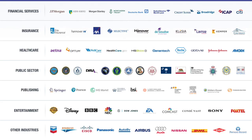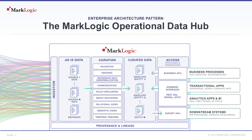Everyone is looking to fulfill the mantra of better, faster, cheaper, no matter the industry. Many major companies have solved their data integration problems with MarkLogic. One example use case is as an operational data hub. It allows you to start with the business problem, decide what data is needed to feed an API that addresses the problem, and then integrate and curate the data. It gives organizations the ability to build a centralized 360 view of data, in a way that is much faster and more agile than any other hub and spoke architecture, but with fine-grained security controls.